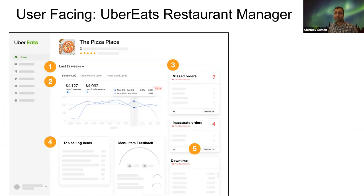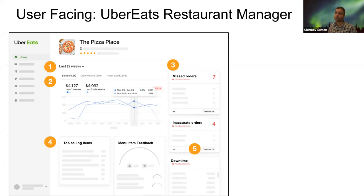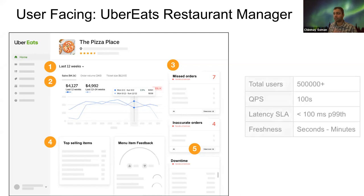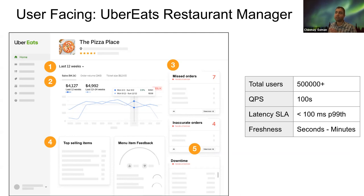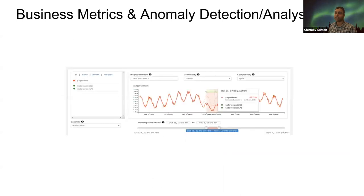Another example is from Uber. Uber Eats has a product called Restaurant Manager, which is given to all the owners of restaurants delivering with Uber. When they open this tool, they see a dashboard showing sales statistics across a wide time range, and also showing things like missed orders or inaccurate orders that need immediate attention. Similar to before, the queries themselves seem straightforward, but we are looking at half a million users - the restaurant owners - with multiple hundreds of QPS, and each one has to execute very quickly. Both these are examples of analytical queries that have a very high throughput, low latency nature, and are user-facing in general.